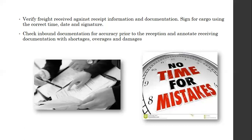Another responsibility is signing for cargo using the correct time, date, and signature. When dispatching goods from the factory, we get a signature from an authorized person — such as a shipping manager — who is authorized for that activity. Before dispatching, we prepare the set of documents, check everything properly, and get it signed by a senior. As assistant manager of export, you are responsible for this activity.